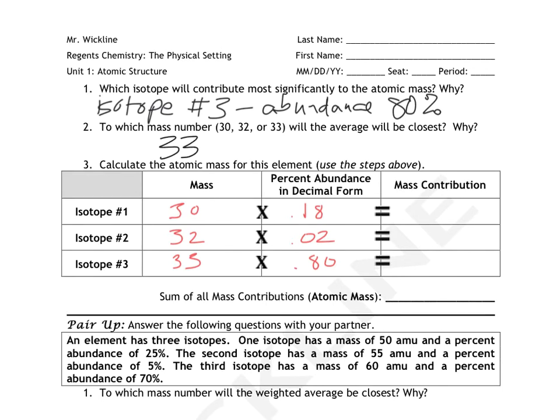So I made a little table to organize my three masses and the three percent abundances in decimal form. One thing to point out, which is that in the question, it said that the percent abundance of isotope number two was 2%. And I wrote 0.02 because that's how you basically take the number that they give you and you divide it by 100 in order to get the decimal form. So 18 became 0.18, 2 became 0.02, and 80 became 0.80.